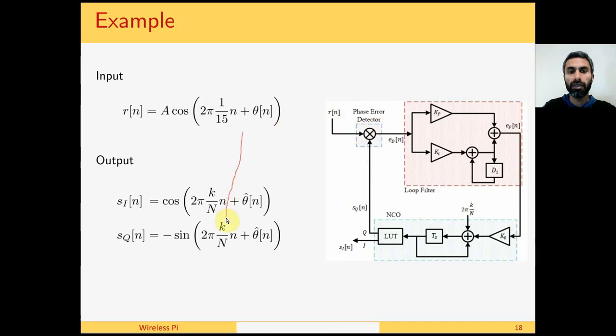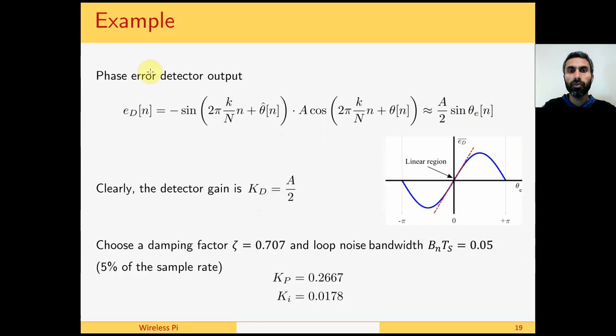These two are multiplied in the phase error detector. Phase error detector output comes out to be sin times cos. There is a double frequency term and there is a DC term. So a by 2 sin theta_e is the term which comes from there. The difference theta_n minus theta_hat_n. From here we can see that sin theta_e for small phase error is given by theta_e. And hence we can say that the phase error detector output is a by 2. If you can see it here, for small values of theta_e, this line is approximately straight. And because it is a linear region, from here we derive the gain of the phase error detector.